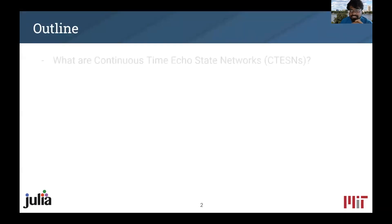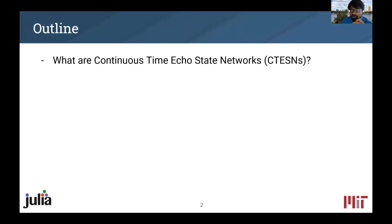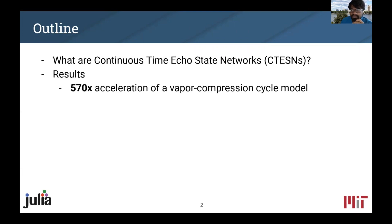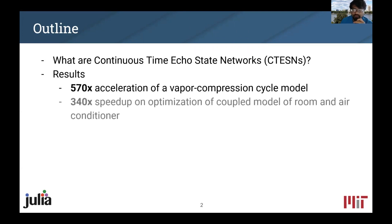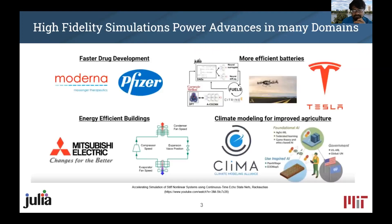Specifically, I'm going to talk about what exactly are continuous time ecostate networks and show you a few results — namely a couple of orders of magnitude speed-up over realistic engineering systems with about 5% error, which I think is pretty promising.